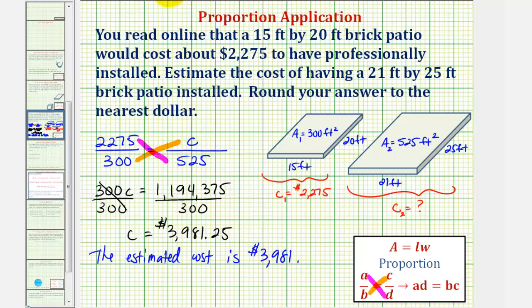So it is important to read the directions, so we don't forget to round this to the nearest dollar. Now this is just one way to solve this problem. Another way would be to use this information here, determine the cost per square foot, then multiply by the area of the larger patio, or multiply it by 525.